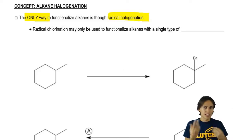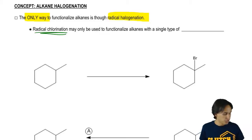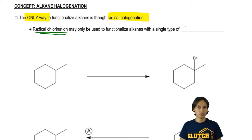And I've already said in past lessons that radical chlorination is really only useful if you have a single type of what in your molecule, do you remember? Hydrogen.